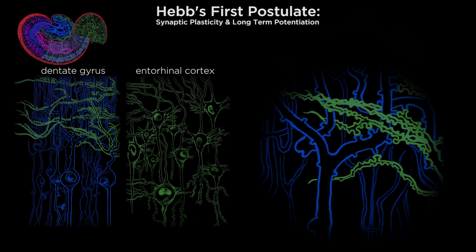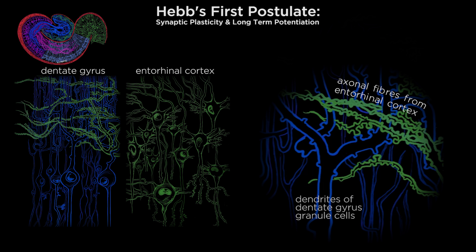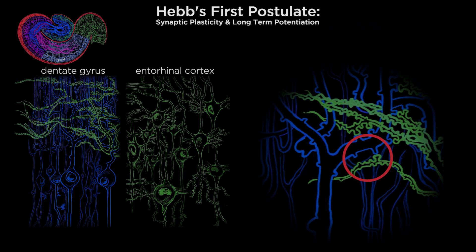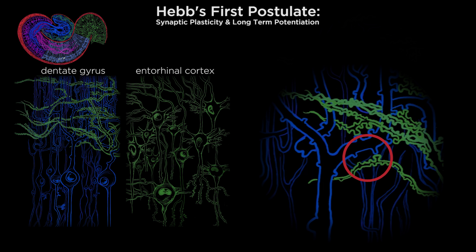Hebb had suggested that learning and memory occurs as a change at the cell-to-cell connection. As we look closer at the axonal fibers arriving from the entorhinal cortex and synapsing on the dendrites of the dentate gyrus granule cells, we can see the boutons or synaptic knobs that Hebb suggested are the site of growth or change in neuronal connections. Further, as mentioned earlier, there is input specificity — only the stimulated synapse will become potentiated.